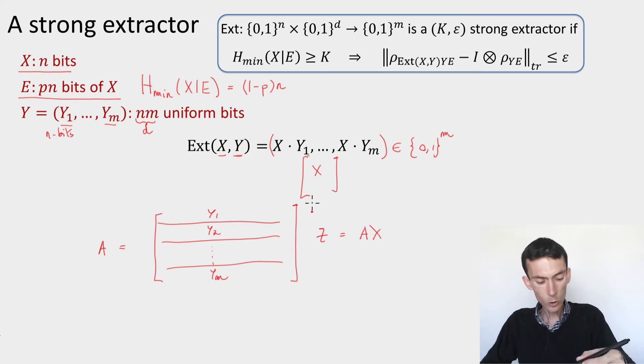In the first entry here, you'll have x.y1, in the second you'll have x.y2, if you consider this matrix vector product over the binary field. So now we want to argue that this is uniform.